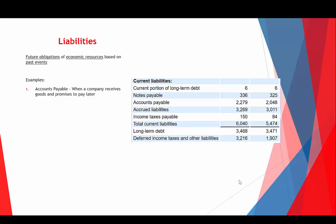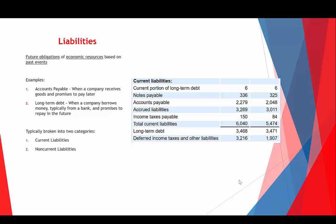A couple of examples: accounts payable — when a company receives goods from a supplier and promises to pay later. And long-term debt — when a company borrows money, usually from a bank or by issuing debt to investors, and promises to repay it in the future. Just like assets are broken into current and non-current, liabilities are also broken into current and non-current. A great example is long-term debt — 6 million is classified as current, meaning it's due within one year, while the rest is long-term.